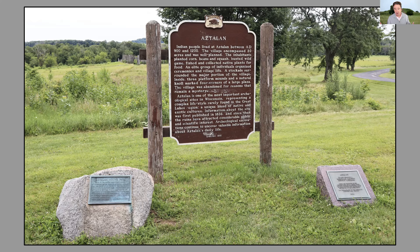That raises some questions. We've got the effigy mound culture from about 900 to 1200 AD, and right at about the same time you have this other culture from the south moving into Wisconsin and establishing basically an outpost — probably for good hunting and resources. There's also a lot of evidence of warfare here: human remains that showed signs of being killed, and fire damage on the walls and stockade. So this was evidently not a completely peaceful entry by the Mississippian people.